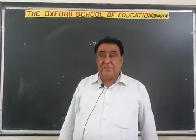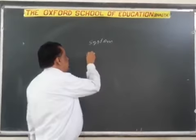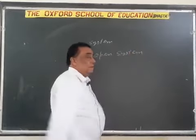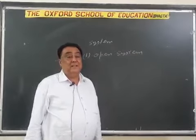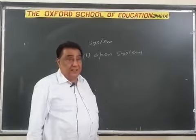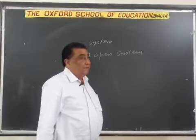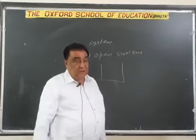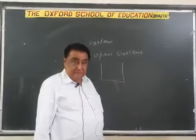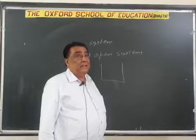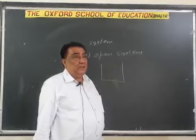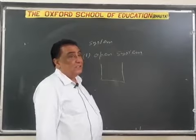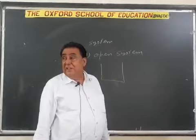Now the types of system. Number one: open system. A system in which matter as well as energy can exchange with the surrounding is called an open system. For example, a chemical reaction with increase in volume occurs in a container — gas produced during the reaction escapes into the surrounding, and heat produced also transfers to the surrounding. Such a system is known as an open system.